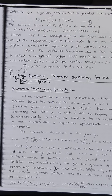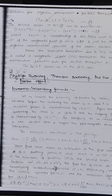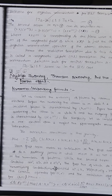The radiative transition due to this term is called a magnetic dipole (M1) transition. The angular momentum selection rule for a magnetic dipole transition is |j_b - j_a| ≤ 1, the same as for the electric dipole transition. Thank you.